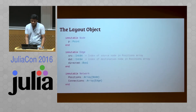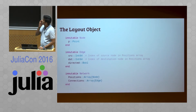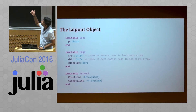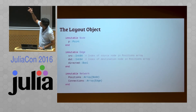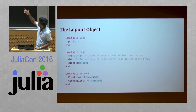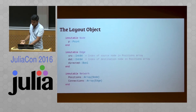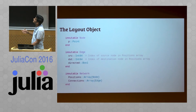This is the basic structure of the layout object I've come up with. The node will be a node object and an edge object. The edge will contain the indices of the nodes, and we can specify whether it's directed or not. As we progress, we'll add more properties to nodes and edges inside the types.